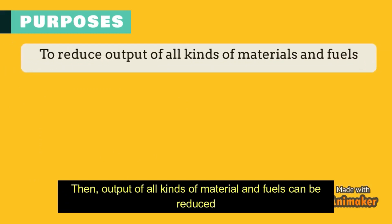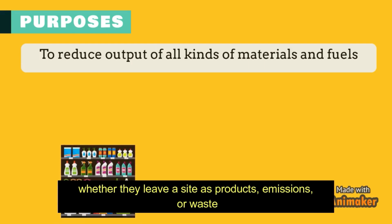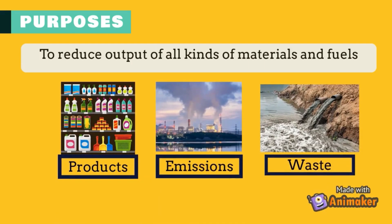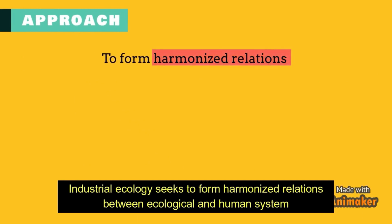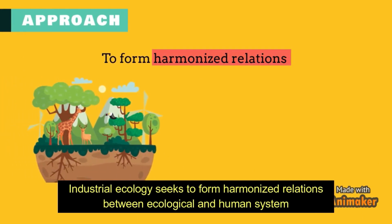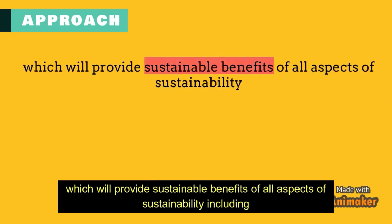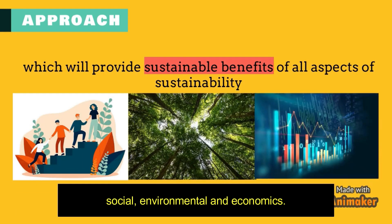Then, output of all kinds of materials and fuels can be reduced, whether they leave aside as products, emissions, or waste. Industrial ecology seeks to form harmonized relations between ecological and human systems, which will provide sustainable benefits of all aspects of sustainability, including social, environmental, and economics.